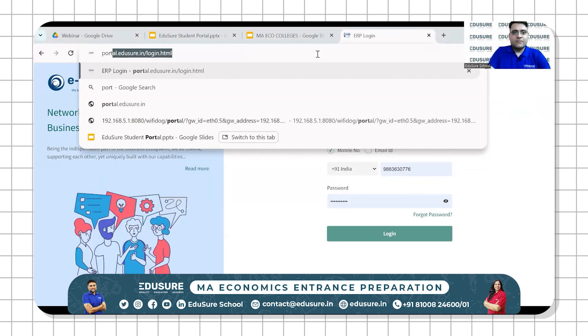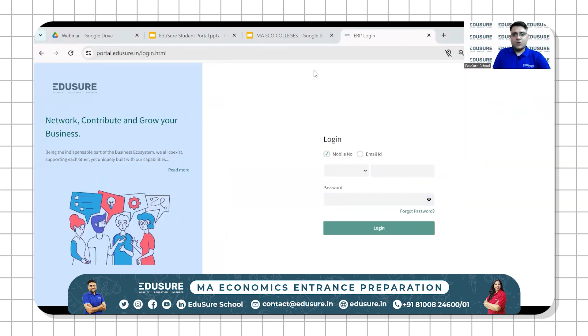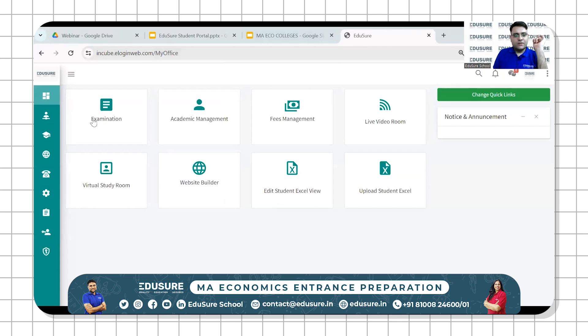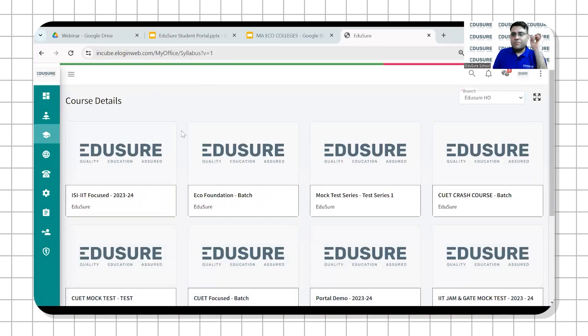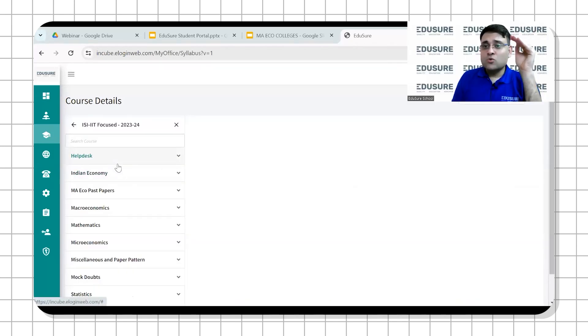portal.edusure.in, and login with the user ID and password that is shared with you. All the courses that are available to you will be shown here. This is my admin portal. You will be part of the ISI IIT bundle course. This is the student portal, this is what you will get access to. The login is also made in a way that if you log in into the laptop, you won't be able to log into your phone.